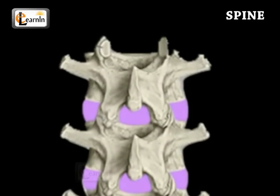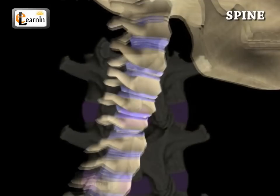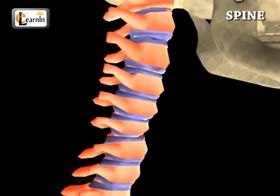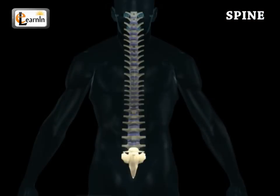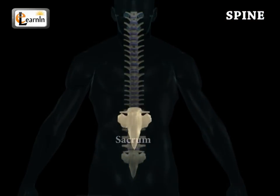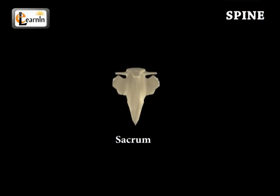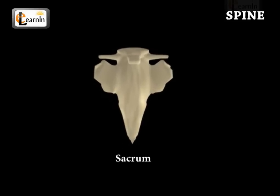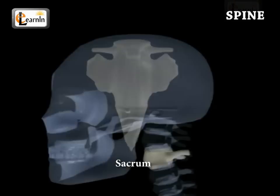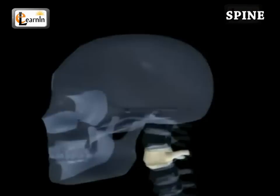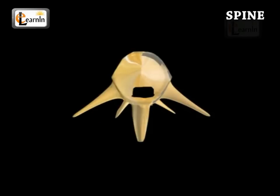One pair of facet joints faces upwards, providing stability to the spine by interlocking with the adjacent vertebrae. A bone called the sacrum lies just below the lumbar spine and is uniquely shaped. The lamina covers the spinal canal, which is a large hole in the center of the vertebrae.